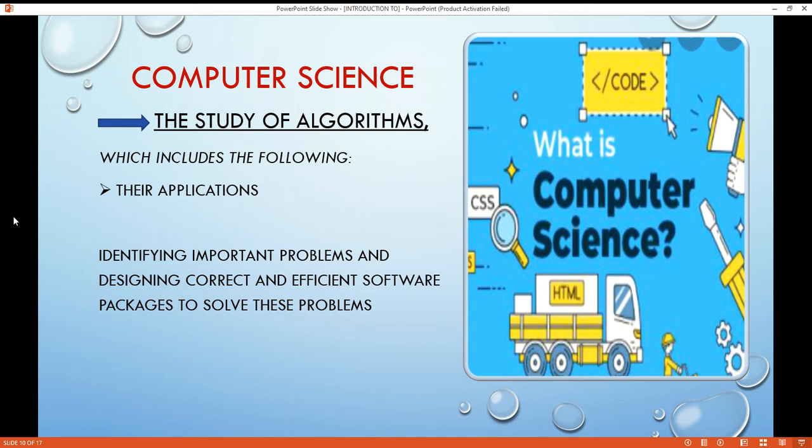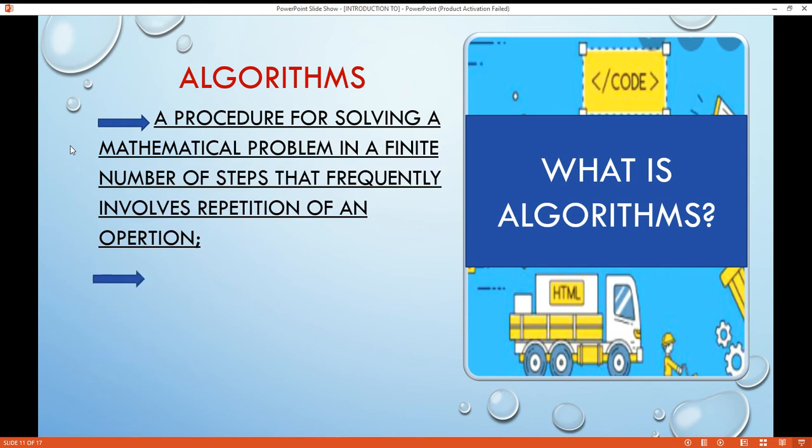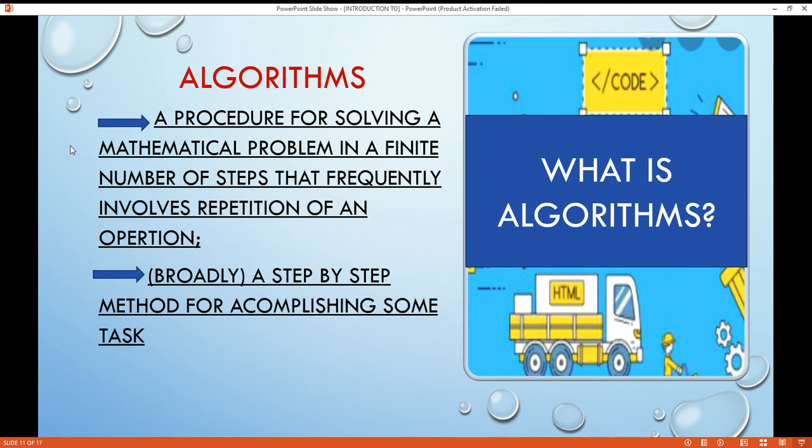Because it is impossible to appreciate this definition fully without knowing what algorithms are, let's look more closely at this term. What is an algorithm? An algorithm is a procedure for solving a mathematical problem in a finite number of steps that frequently involves repetition of an operation. The broad meaning of algorithm is a step-by-step method for accomplishing some task. Informally, an algorithm is an ordered sequence of instructions that is guaranteed to solve a specific problem.